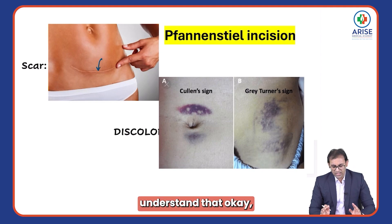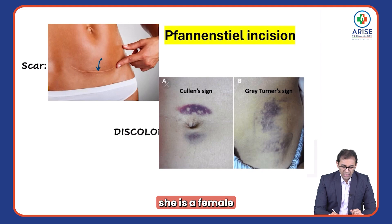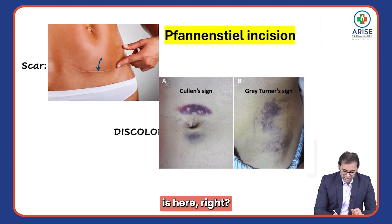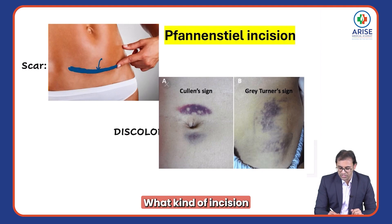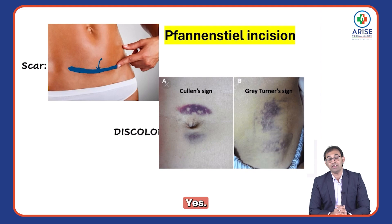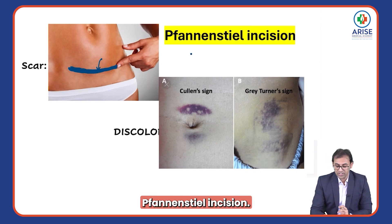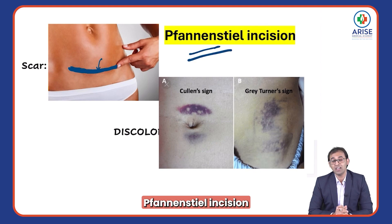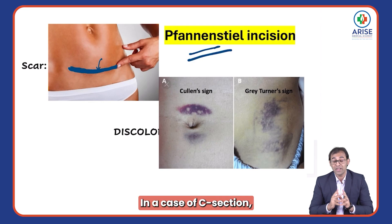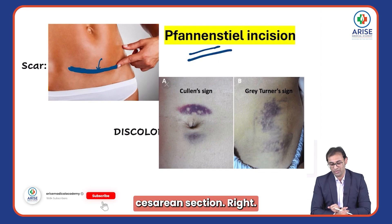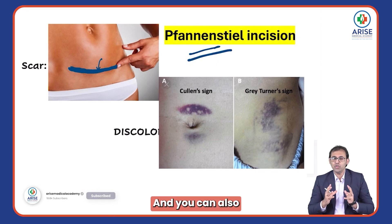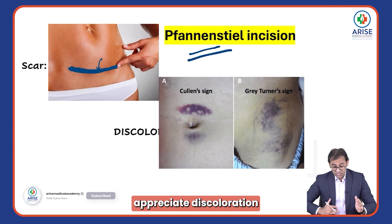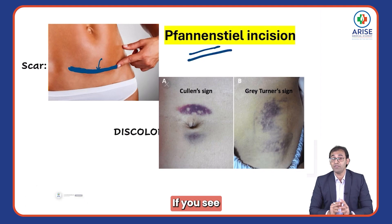Now see this scar. After looking at this scar, you can easily understand that this is a female and the scar is here. This is called the Pfannenstiel incision. Where do you give a Pfannenstiel incision? Yes, in a case of C-section — caesarean section.